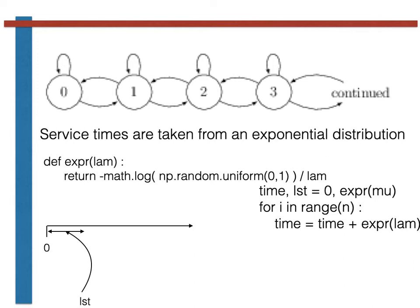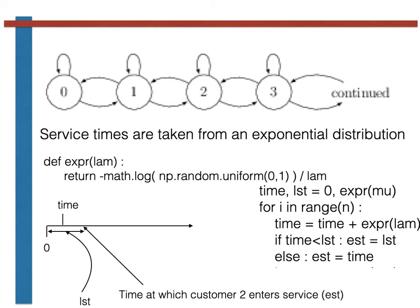Let's now try to work out the time that the second customer enters service. If the variable time, which remember is the time at which this first customer arrives at the queue, is as shown here, then he has to wait until the first customer is done being served before he, the second customer, can be served. He will thus enter service at the time shown here, LST.